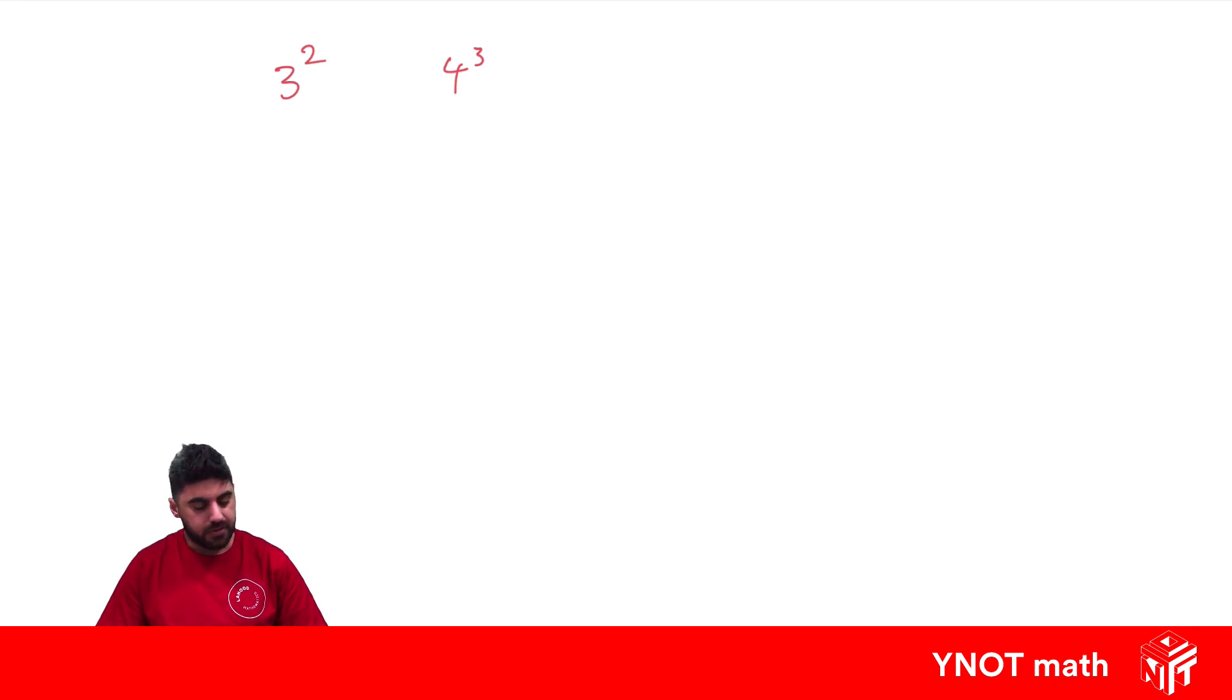And some of the square numbers we should really know off the top of our head. Let's have a look at a few. 1 squared, well that means 1 times 1, and that's 1. 2 squared means 2 times 2, which is 4. 3 squared means 3 times 3, which is 9. 4 squared means 4 times 4, which is 16. 5 squared means 5 times 5, which is 25.